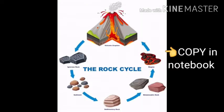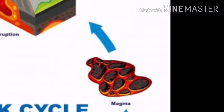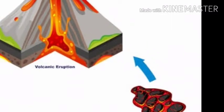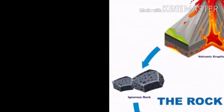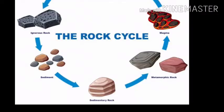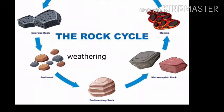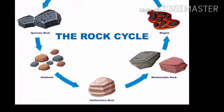Let's understand the rock cycle. Molten magma, after a volcanic eruption, changes into igneous rock. Then, igneous rock — due to cracking and breaking — changes into sediments, and those sediments, by transporting and layering, get compressed under the pressure of the earth and become sedimentary rock.